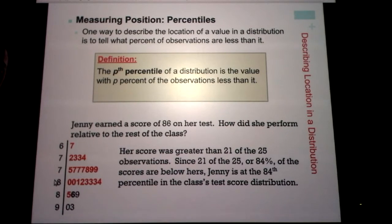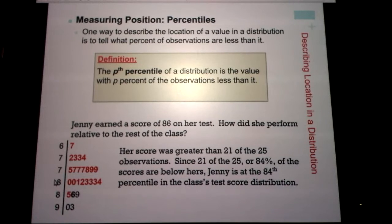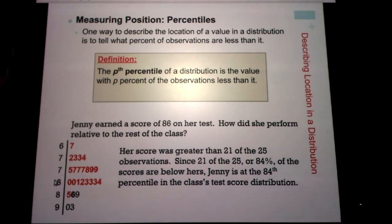It's not possible to be at the 100th percentile. Let's look at the data — who scored the best? The person with a 93. How many people scored below a 93? That would be 24 out of 25.